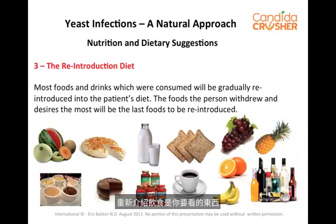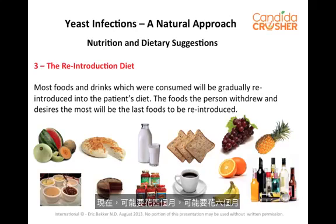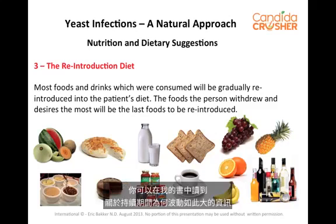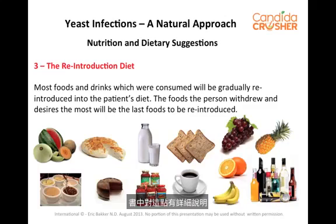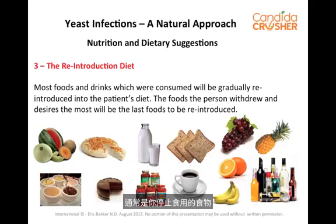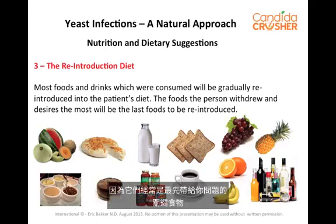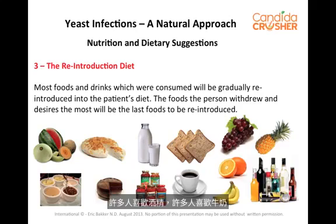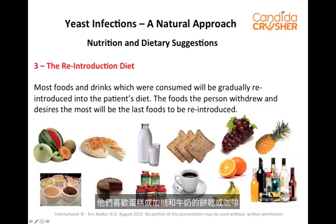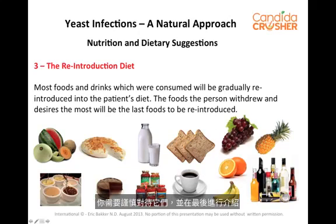The reintroduction diet is something you look at once you start feeling a lot better and a lot of your key signs and symptoms start disappearing. This may take two months, four months, six months, or 12 months. The foods you need to reintroduce first are generally the foods you discontinued which gave you the least aggravation. You're not going to introduce cow's milk straight away. The foods you want most back in your diet are the ones you introduce last, because they're often the key foods that caused you an issue in the first place — such as alcohol, cow's milk, yeasty breads, cakes, biscuits, coffees with sugars, citrus, and bananas.